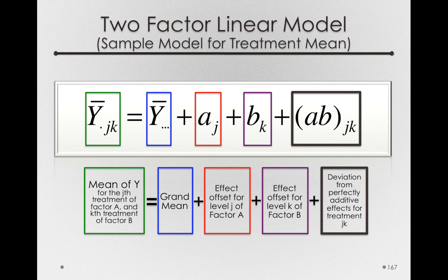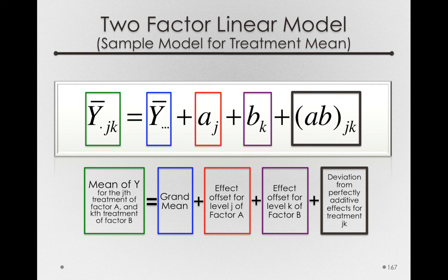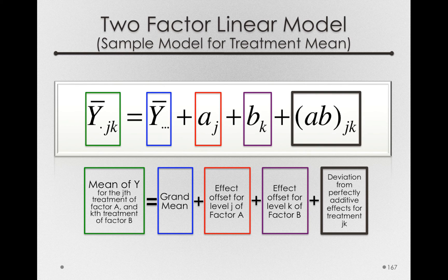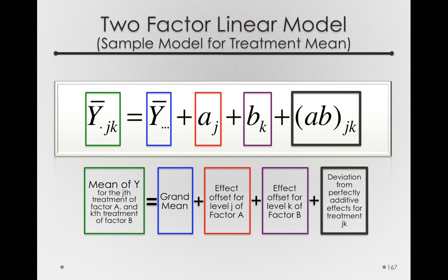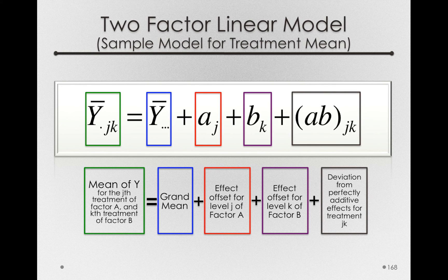Now, that doesn't mean the interaction is statistically significant. We'll come back to, in a later portion of this module, discussing the testing of these terms. But notice that this is in the decomposition of the treatment mean itself. The ABJKs will be non-zero to the degree that there is any interaction in the data themselves. So this is our two-factor linear model decomposition for the treatment means.